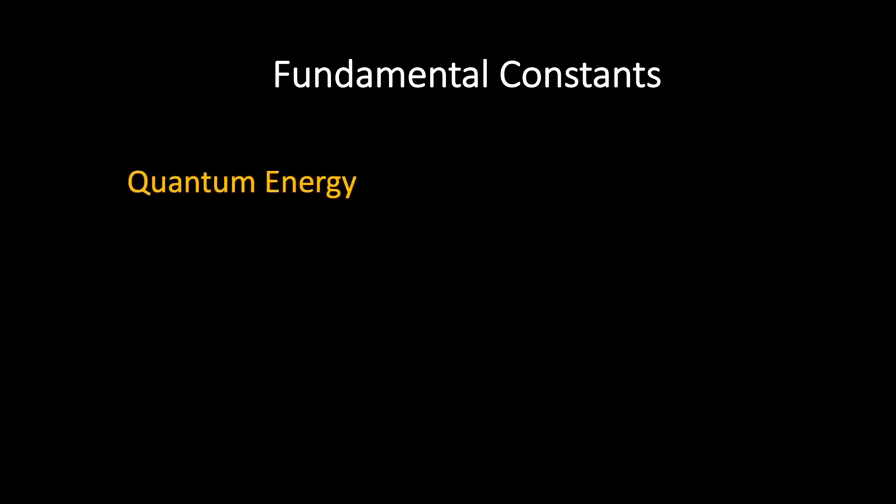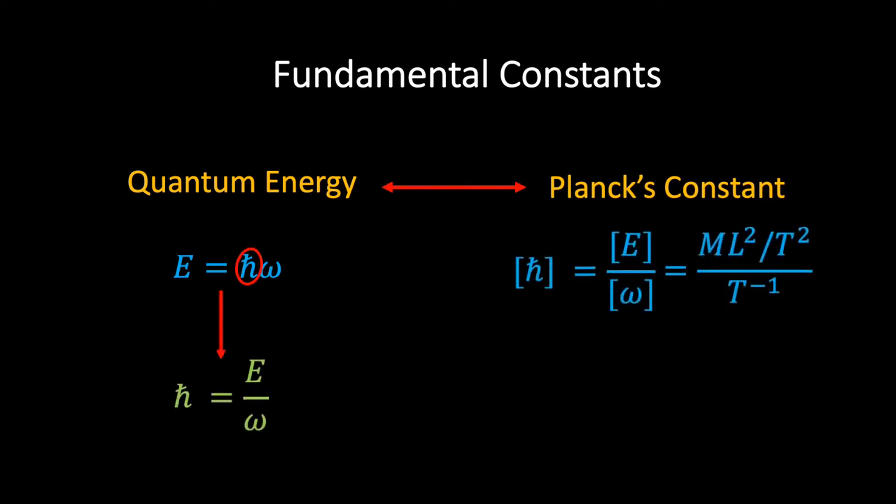Next, consider the famous quantum energy relation E equals h-bar omega, which relates the energy of a quantum of light to the frequency of the light. Here, h-bar is the reduced Planck's constant. In order to determine the dimensions of h-bar, we simply rearrange the energy equation. Since frequency has dimensions of inverse time, we see that the dimensions of h-bar is ML² over T.